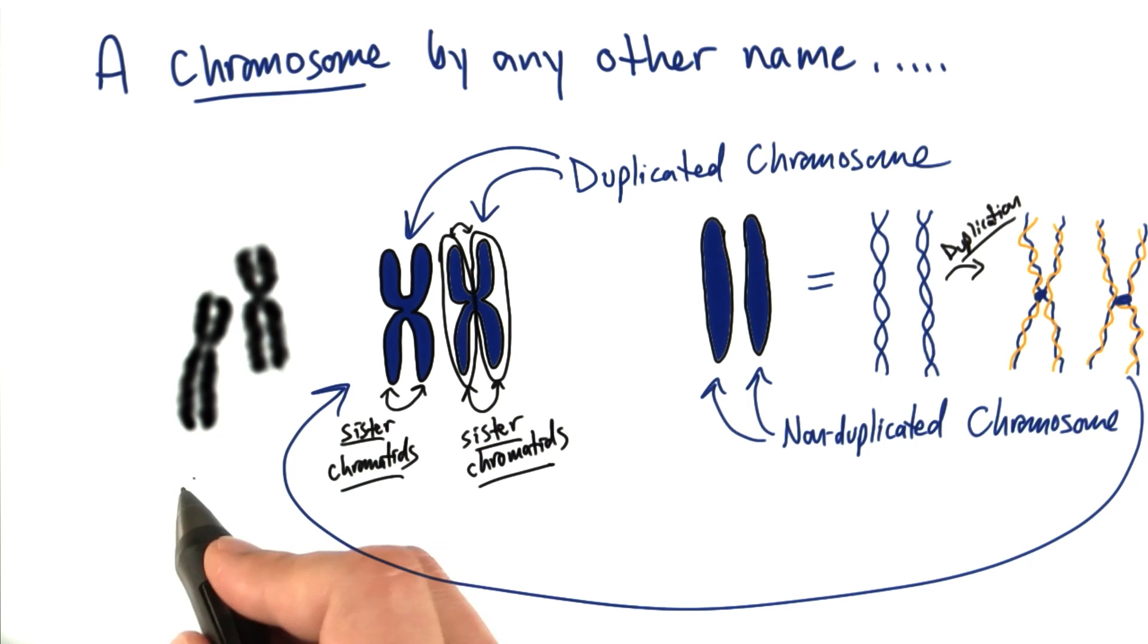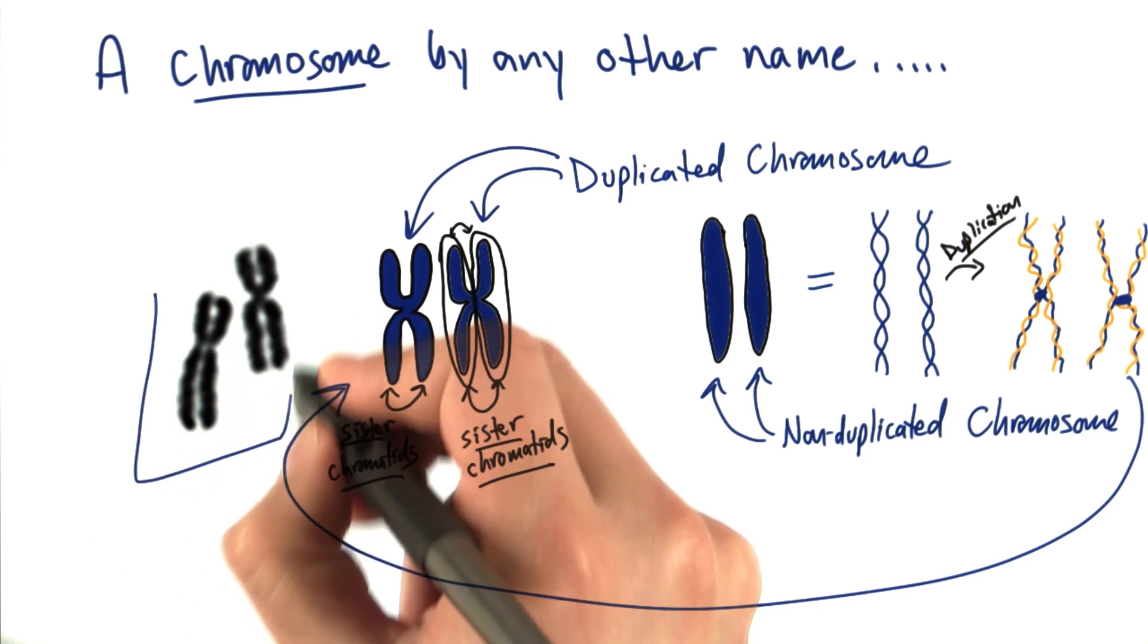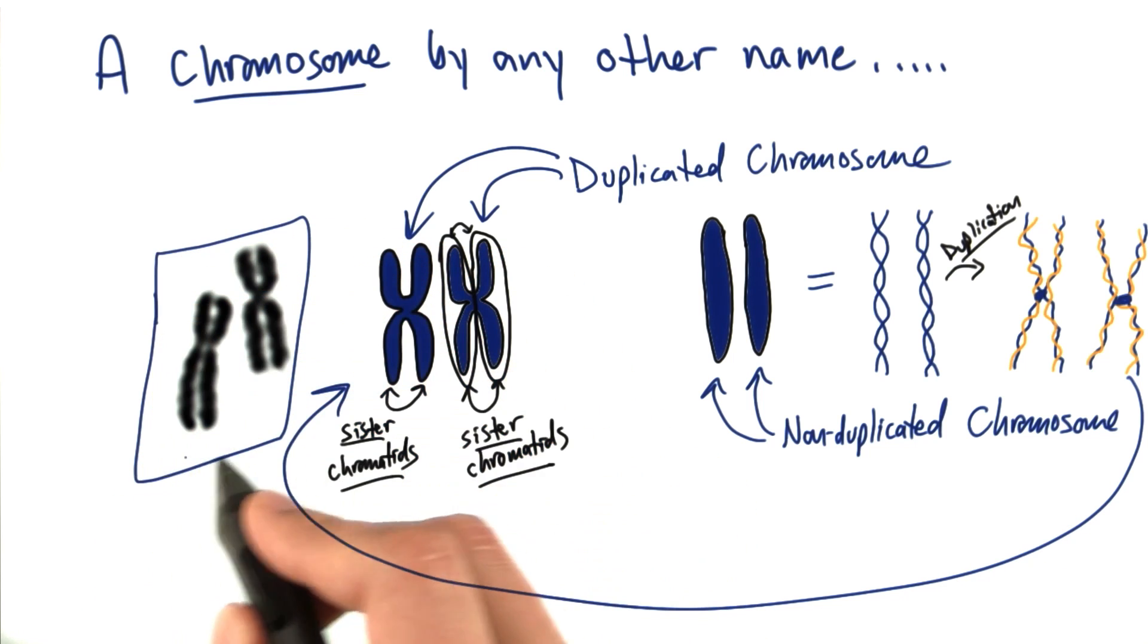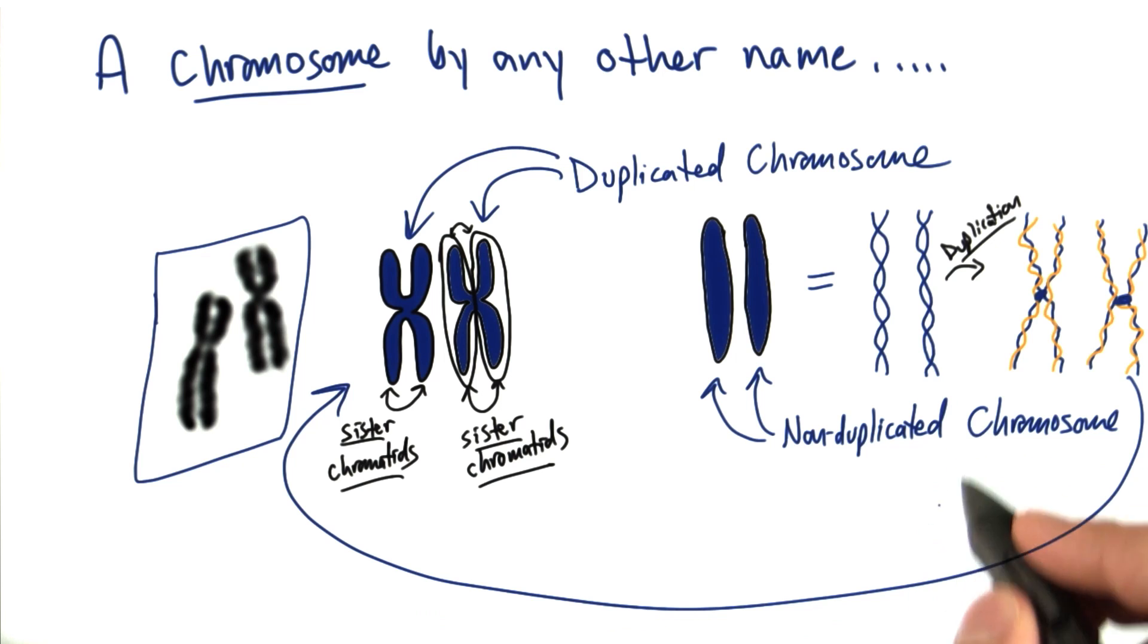The reason most pictures you've seen of chromosomes look like this is because this is when they're most condensed and easy to see. As you can imagine, DNA is like a big loose string that's really long inside a cell and it's normally sort of loosey-goosey hanging out.